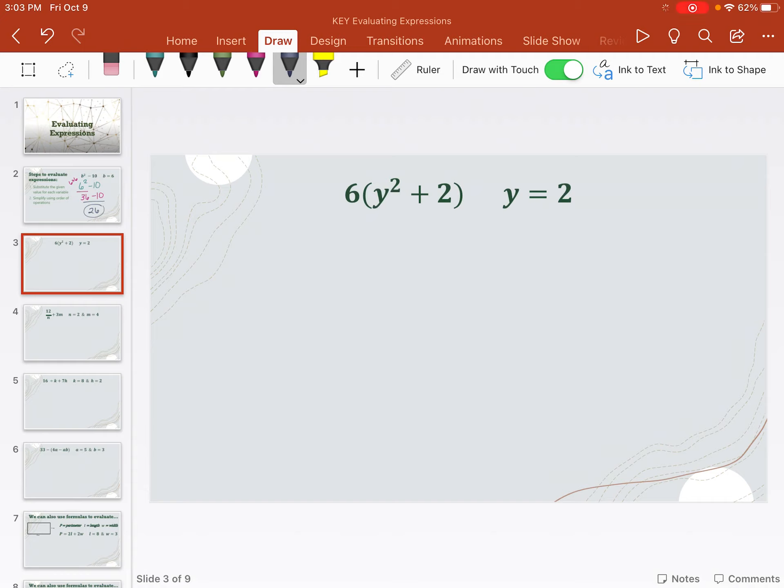Same thing here. I'm going to substitute it in first. So y is 2. So wherever I see a y, I'm going to put 2. So 6, parentheses, 2 squared plus 2. And then solve order of operations. So parentheses first. Inside of those parentheses, I need to do the exponent first. So 2 squared is 2 times 2, which is 4. Bring everything else down. I'm still keeping everything in the parentheses because I'm not done yet. Only once I get one number in parentheses, then I can get rid of them.